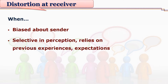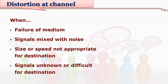Many a times participants may have different expectations from the sender, and the sender is giving different messages — this leads to distortion due to the receiver and not the sender. Many a times senders are very careful, receivers are also open to receive the message, but the channel fails. There are distortions at the channel — sometimes the medium fails, sometimes the signals get mixed with some noise, either there is a bandwidth issue or there is external noise, sounds, or disturbance in the line.